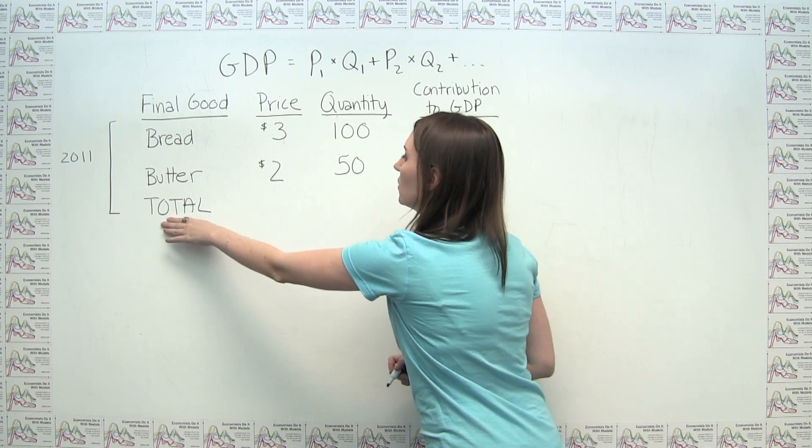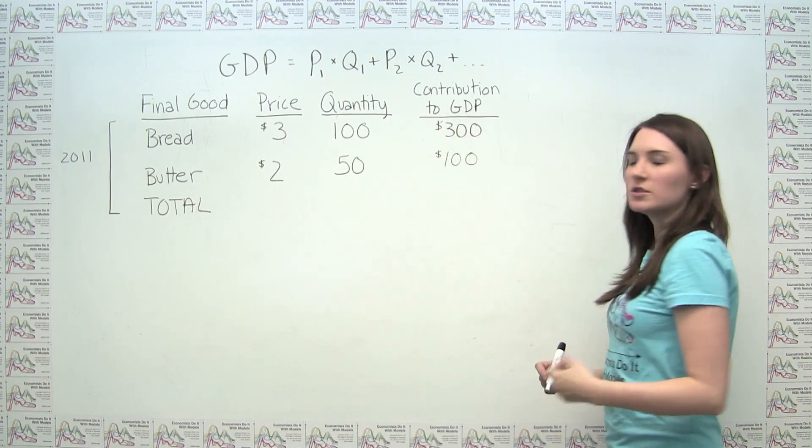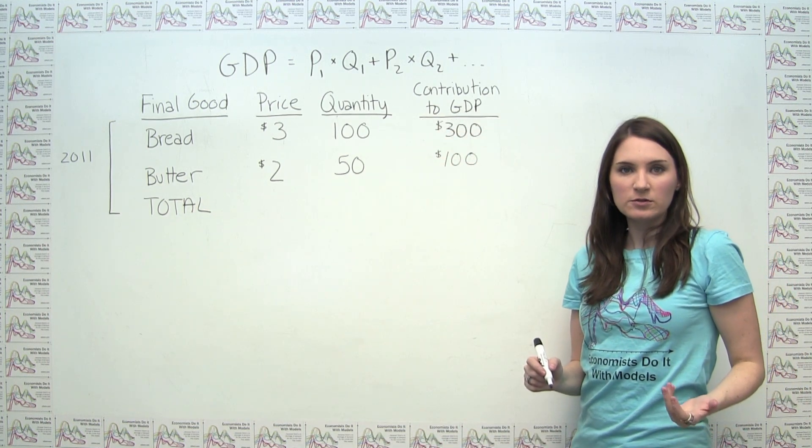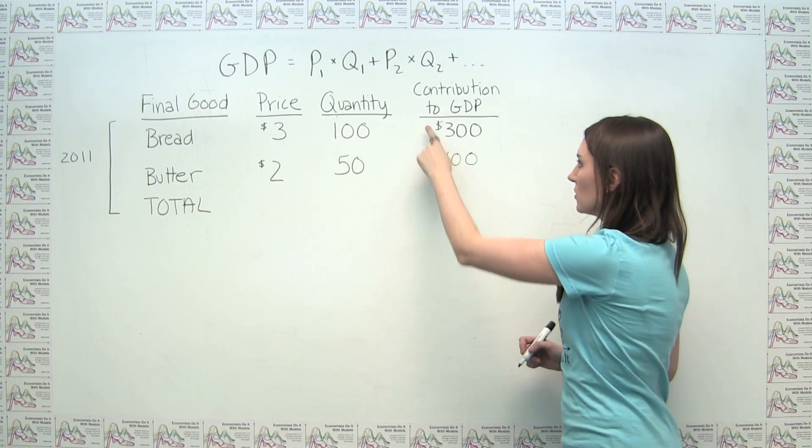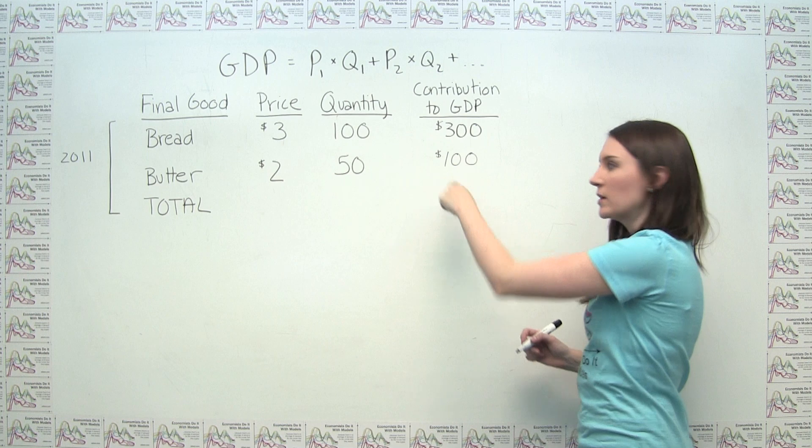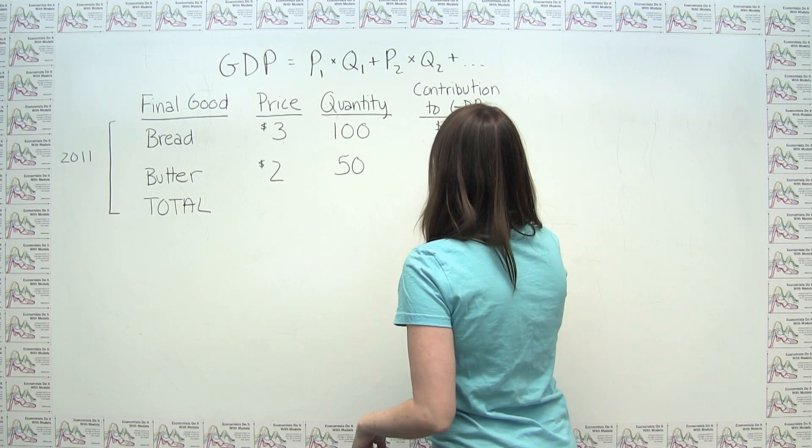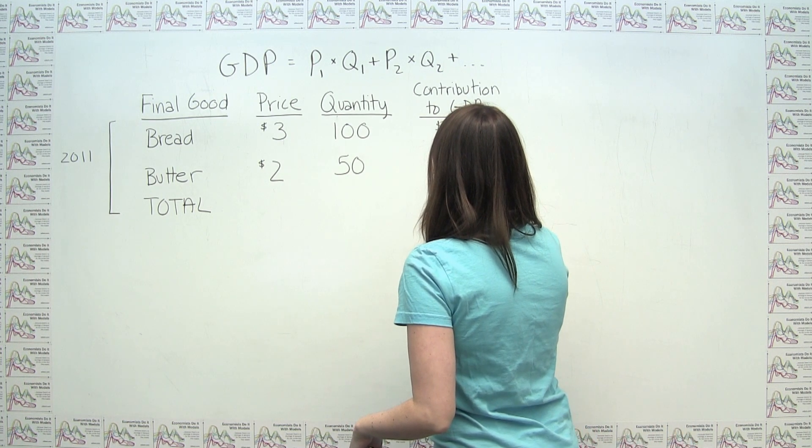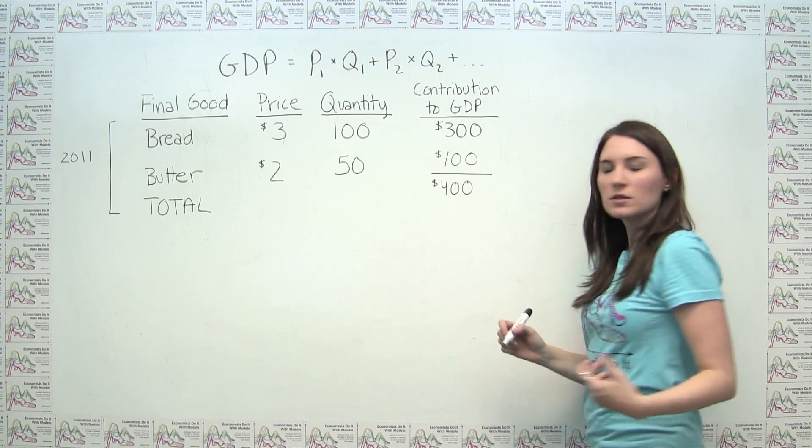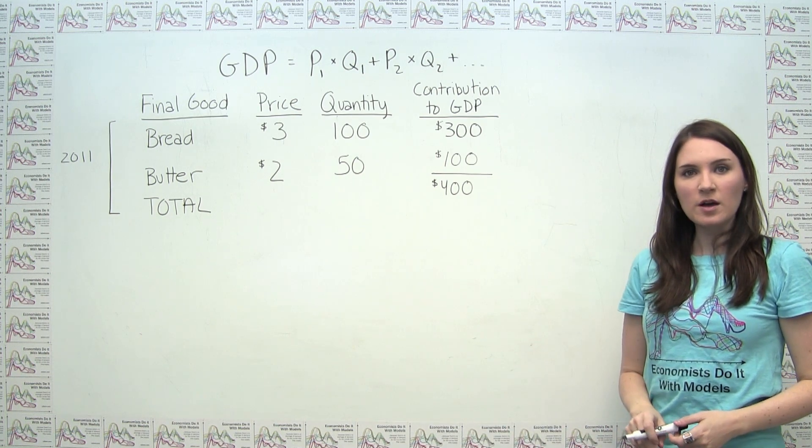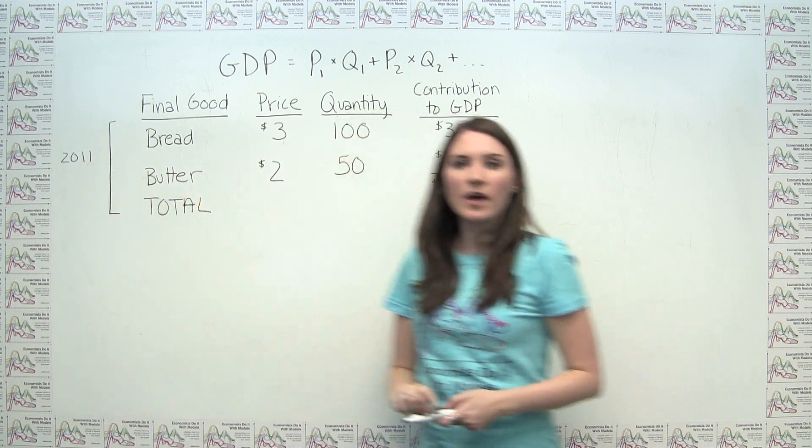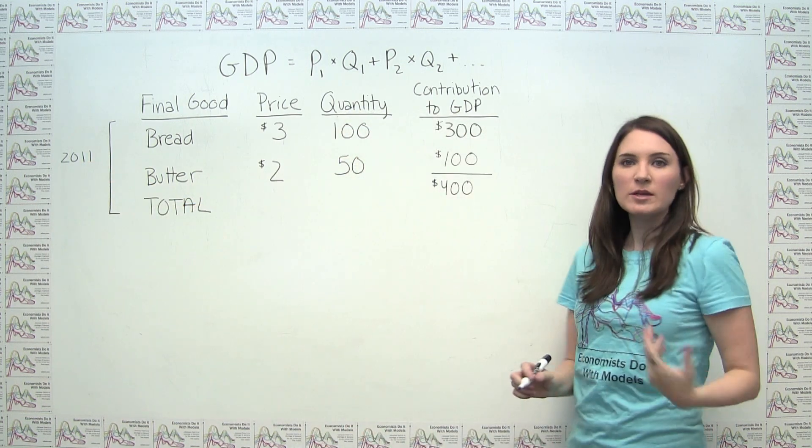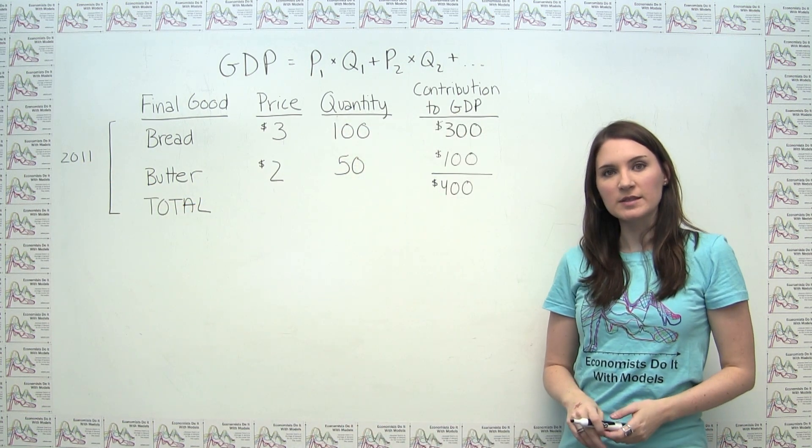We can think of total GDP, then, as just the sum of the individual goods' contributions to GDP. So we can just think about this total as $300 plus $100, or $400. So we can say for our very simple economy in the year 2011, as I've noted here, that our GDP, or our measure of total output or income, is in fact $400.